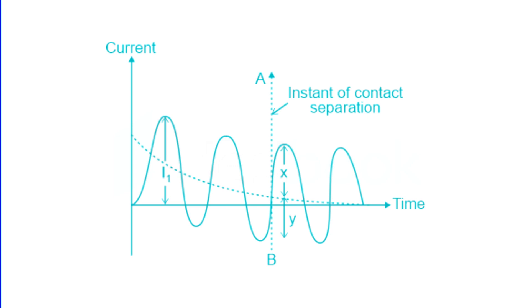The breaking current of a circuit breaker depends on the point in the current wave at which the breaker's contacts start to separate. In the picture, the contacts start to separate at point AB.